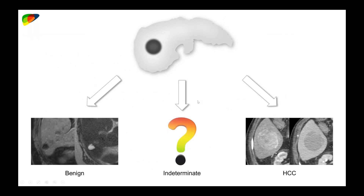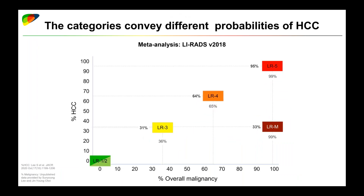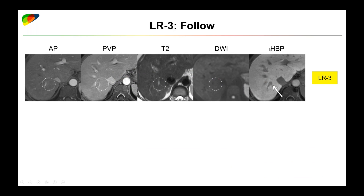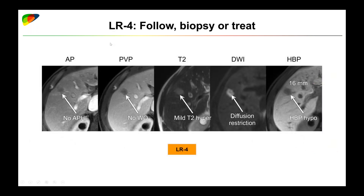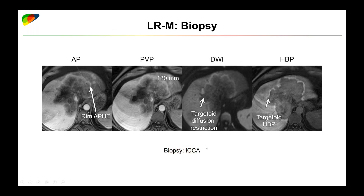What does LIRADS offer? Instead of having this bucket of indeterminate lesions, we provide granular categories. Each of these categories provides an idea of the probability of HCC and malignancy for a given lesion, and we can use these categories to guide management so that the approach to indeterminate lesions becomes much more standardized and reproducible across institutions. For example, the first case meets criteria for LIRADS-3 — safe to follow. The second meets criteria for LIRADS-4 — should be followed, biopsied, or treated; in this case, it was resected and was HCC. The final is LRM, and this was intrahepatic cholangiocarcinoma.